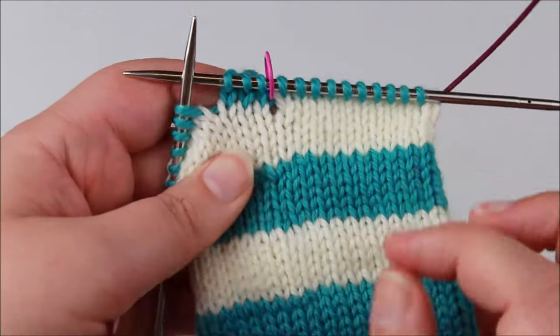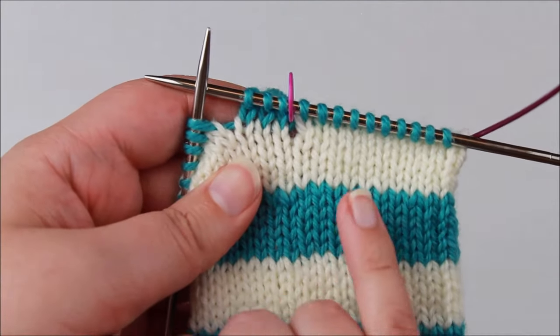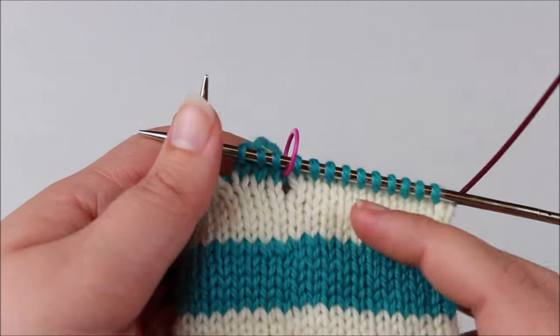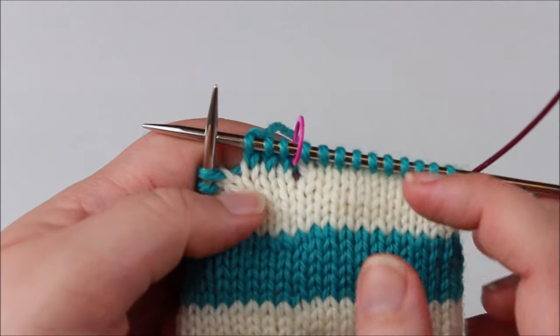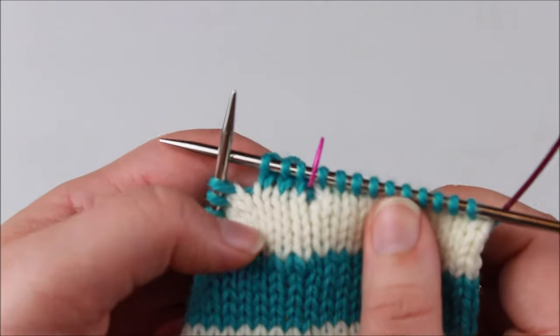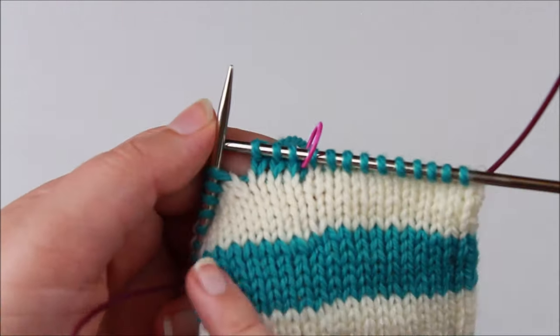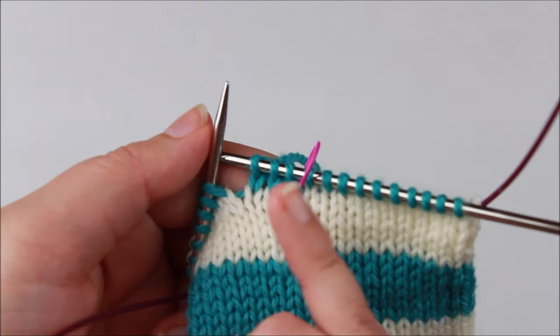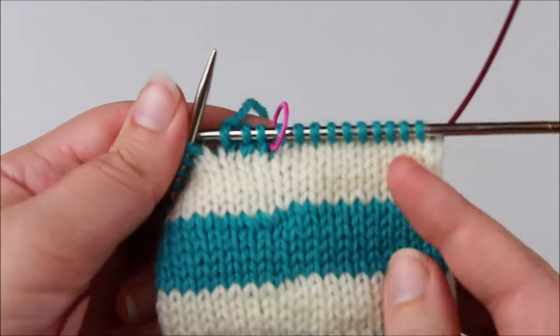So if you keep doing that you'll end up with this sort of effect where the stripe is quite jogless. Because I'm working quite wide stripes here I'm just cutting between each colour and then I just need to weave in the ends at each point where the colours change. But otherwise I'm just going to work a couple more rounds and then I would change colours again just as I've shown you. So that's how to work jogless stripes in the round.